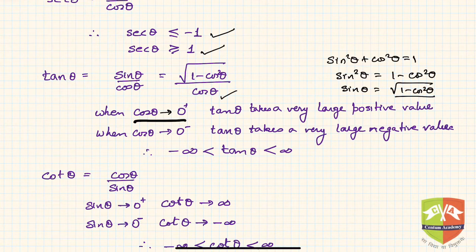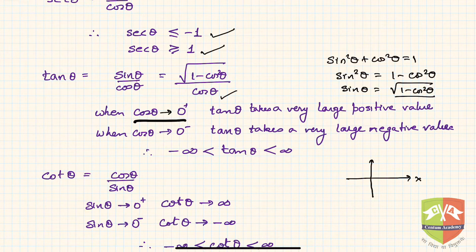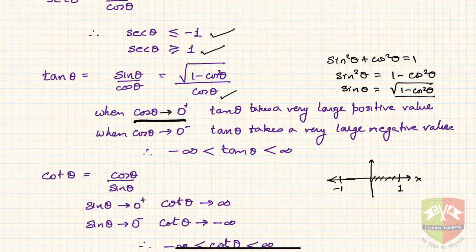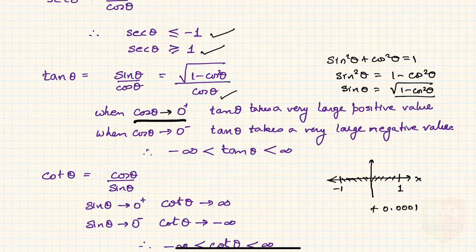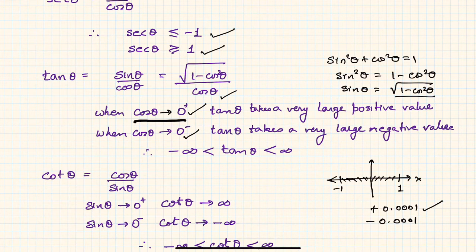Look at this expression carefully. Imagine an x-axis representing cosθ values, ranging from minus one to plus one. When cosθ tends to zero from the positive side — meaning cosθ is very small but positive, like +0.0001 — the numerator stays close to one while we are dividing by a very small positive number. The cosθ value can also approach zero from the negative side, like −0.0001.